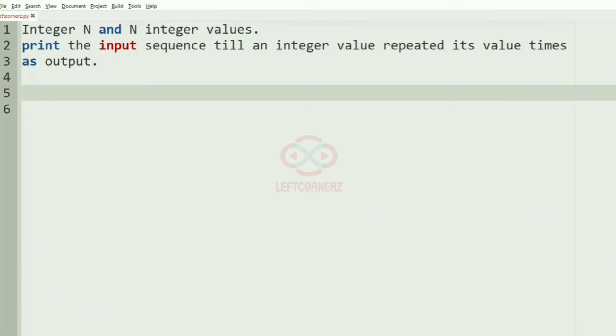First we'll understand our question. The program must accept the integer N and the N integer values and print the input sequence till an integer value is repeated its value times as the output.